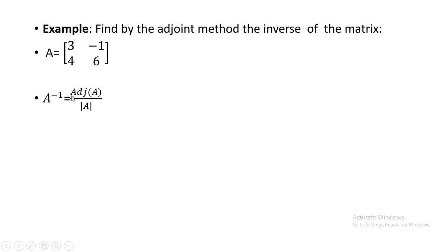The formula for A inverse is adjoint of A divided by the determinant of that matrix. If there is a singular matrix — that is, if the determinant is 0 — we do not proceed further, because anything divided by 0 tends to infinity. We need to make sure the denominator is not equal to 0; it should be any number but not 0.